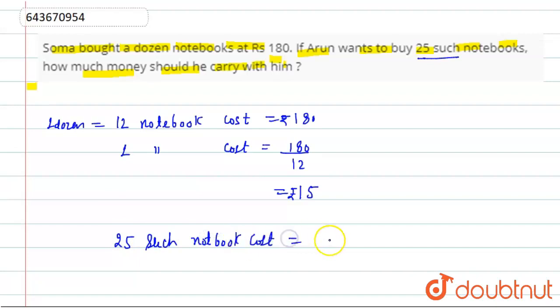So this is 15 into 5, 125, 15 into 1, 15, 15 plus 12, 37.